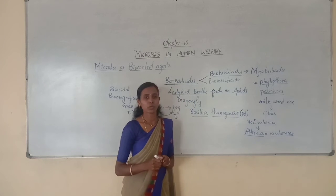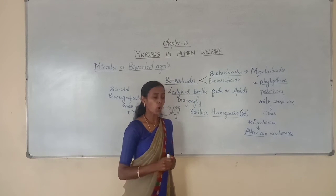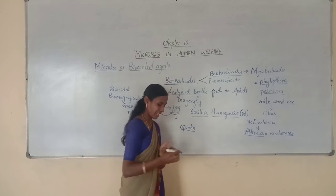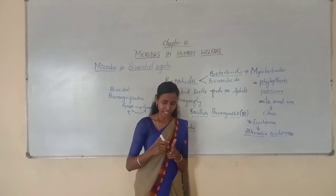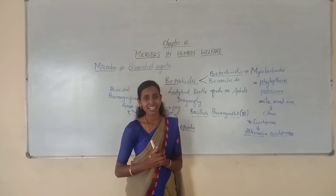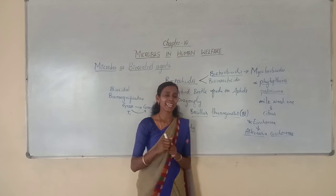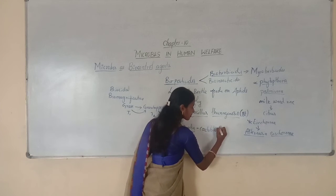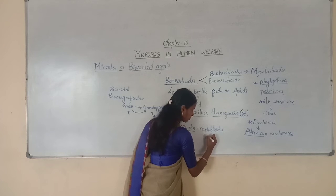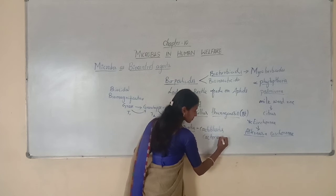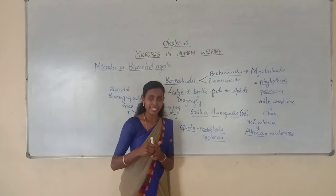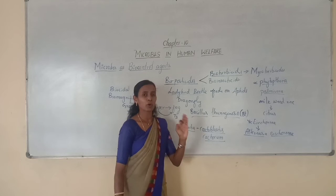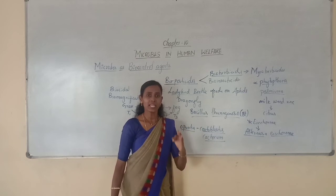One more example: Opuntia, which are cactus commonly growing in India and Australia. The growth of this cactus can be controlled by an insect called Cactoblastis cactorum. Cactoblastis cactorum is one of the insects which feeds upon Opuntia so that the Opuntia or cactus can be controlled.